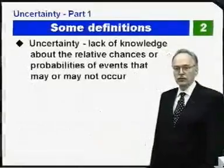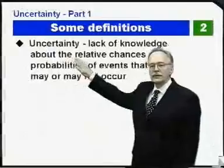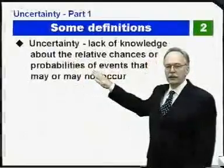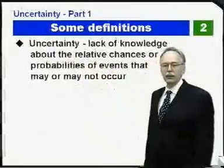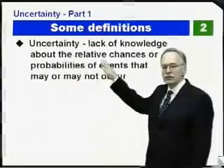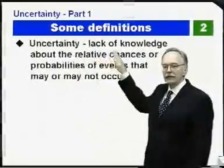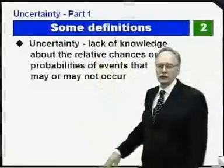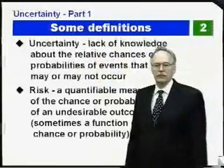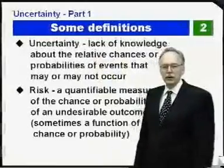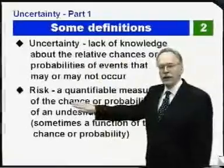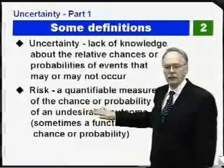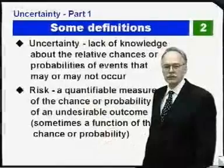Let's provide some definitions. Uncertainty is the lack of knowledge about the relative chances or probabilities of events that may or may not occur. Notice the word 'lack of knowledge' — you don't know what's going to happen. Risk, on the other hand, is a quantifiable measure of the chances or probabilities, particularly of undesirable outcomes.